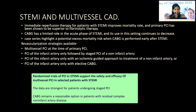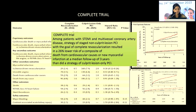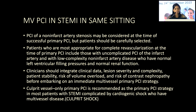Various randomized trials support the efficacy and safety of multivessel PCI in selected STEMI patients, and CABG remains a reasonable option for residual complex disease. The COMPLETE trial showed that culprit vessel treatment at presentation followed by non-culprit lesion PCI within 28–45 days achieved complete revascularization, resulting in a 26% lower risk of composite cardiovascular outcomes at three-year follow-up. In cardiogenic shock, only the culprit artery is treated, supported by evidence from the CULPRIT-SHOCK trial.